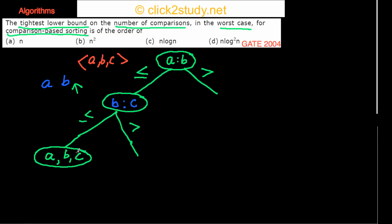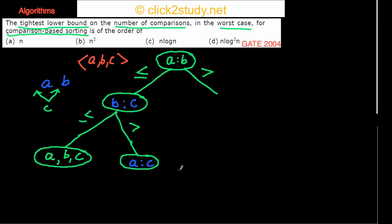But if b > c, then c can go in two possible places. We know a ≤ b and b > c, so c could go at the beginning or in the middle. To decide, we need to compare a and c.